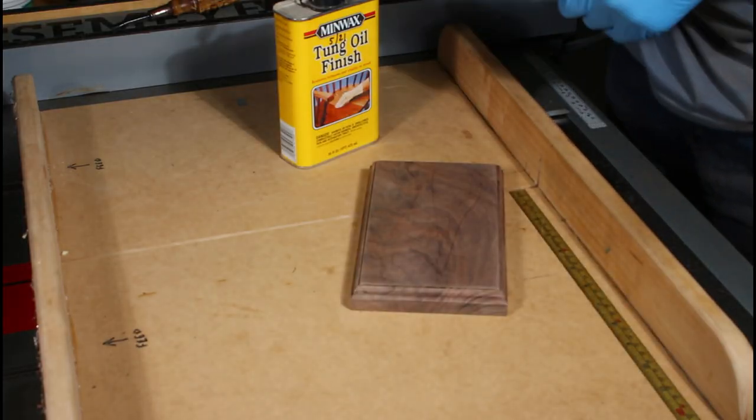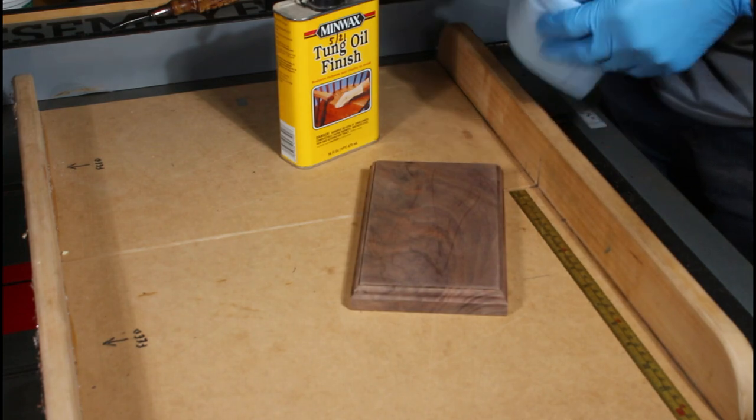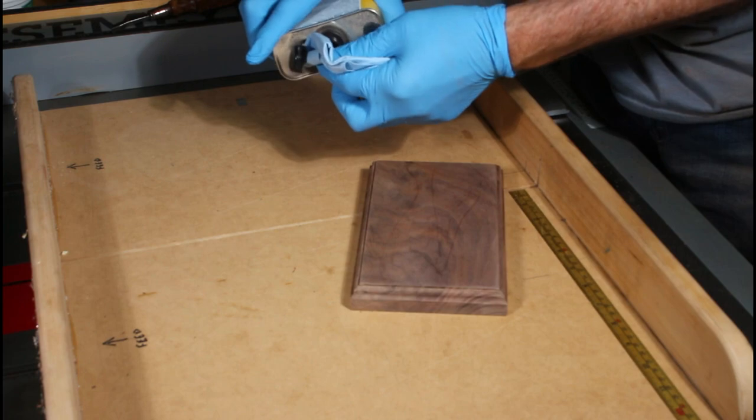Okay, now a quick coat of wipe-on tung oil finish. And then I'll probably add some wipe-on poly on top of that, which is the way I normally make furniture back when I used to make furniture.